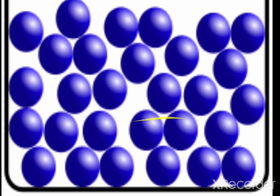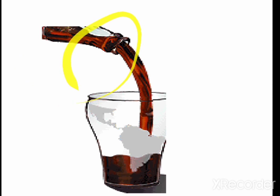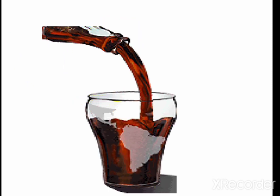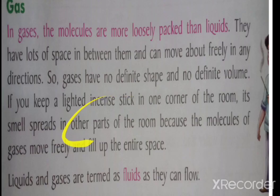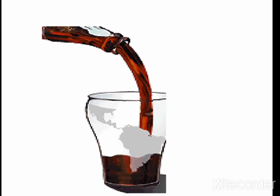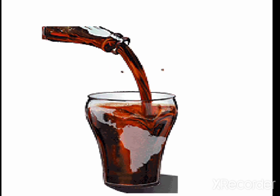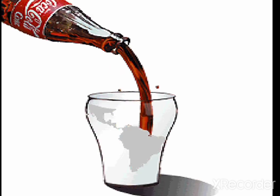Because liquids have a definite volume, they can flow easily and can be transferred from one container to another. This is why we can pour an equal quantity of milk — for example, into a jar.